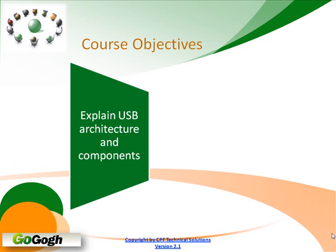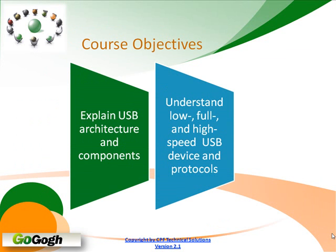Now the course objectives. By the end of this course, you should be able to explain USB from an architectural standpoint, identify the components that make up USB, and define those components. You should understand the different speeds in USB — USB has three speeds: low, full, and high speed — and the differences between those speeds, the different device requirements for those speeds, and the protocol differences between them.